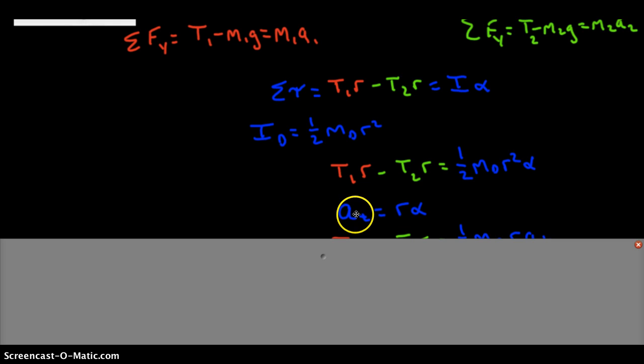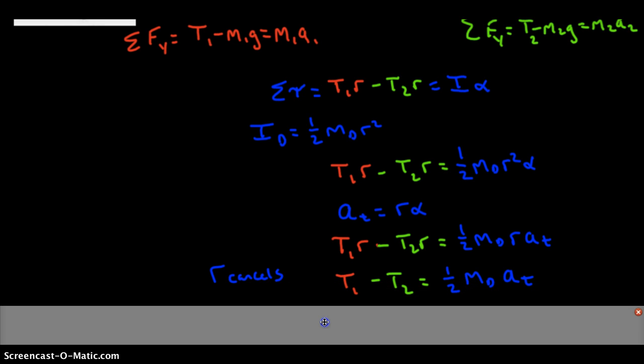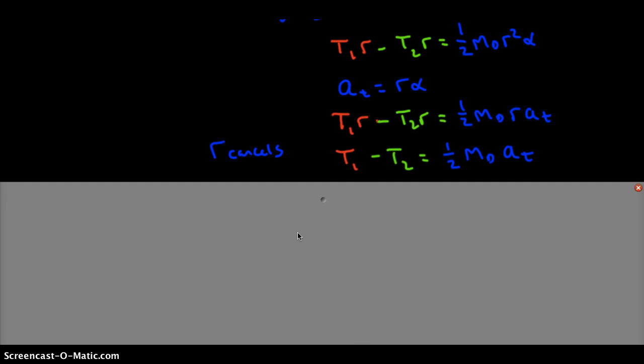Yielding this, and we can see we get one more simplification then. R cancels out from all of the terms in this equation, yielding this. Look at that, it's looking simpler all the time once we cancel R.